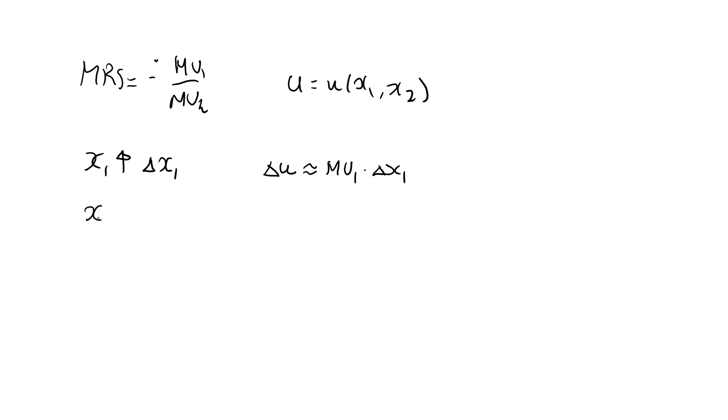This result holds if I keep x2 fixed. Similarly, if I keep x1 fixed and increase x2 by a small amount delta x2, then utility will increase by approximately mu2 multiplied by delta x2.